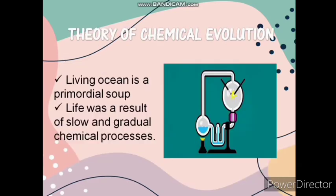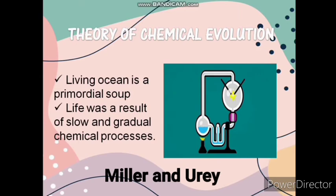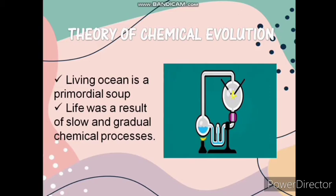The last theory is Chemical Evolution, which explains the early ocean as a primordial soup — a rich collection of complex molecules produced by natural chemical reactions. The scientists who made a simulation of ancient Earth conditions were Miller and Urey. Under their experiment, a simulation of the water cycle demonstrated that biomolecules can form under Earth-like conditions. The experiment was once a mere speculation that life may have emerged from chemistry. This theory explains that life was a result of slow and gradual chemical processes.